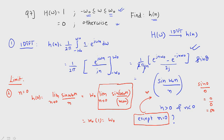Sorry, there is one minor mistake — I missed pi. Pi would be present in the earlier expression, and in the final answer as well. So the correct answer is omega 0 over pi. Take care that the answer has pi in the denominator.